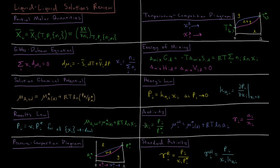Sometimes solutions do not behave ideally, so instead of mole fraction we need an analogous quantity for non-ideal behavior when calculating chemical potential. This quantity is activity, defined for a substance in solution as its vapor pressure divided by the vapor pressure of it as a pure liquid. For ideal solutions, mole fraction and activity are the same, but activity accounts for deviations from ideal behavior. For all substances, regardless of ideality, the chemical potential in solution equals the chemical potential as a pure liquid plus RT times the natural log of activity.